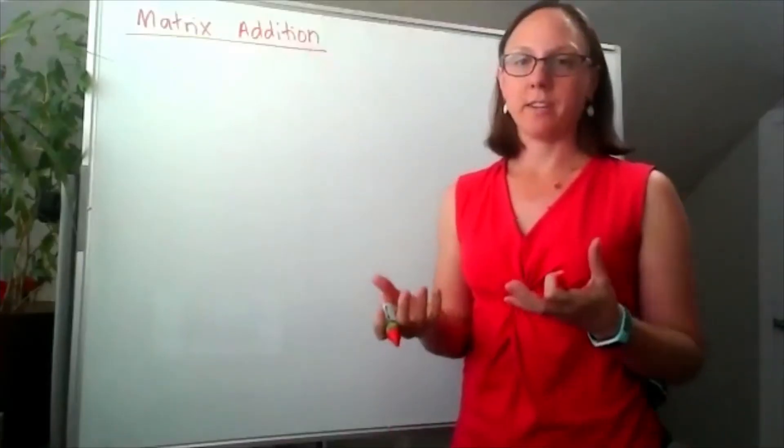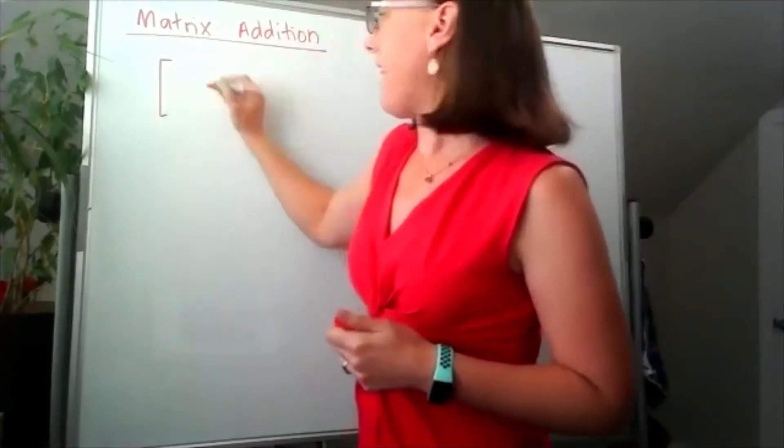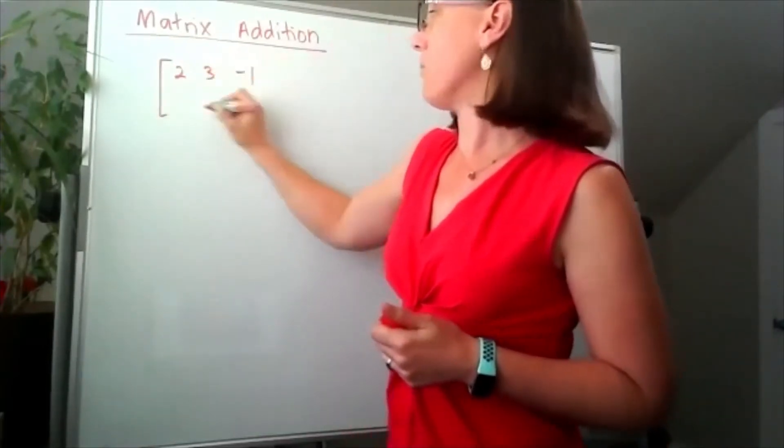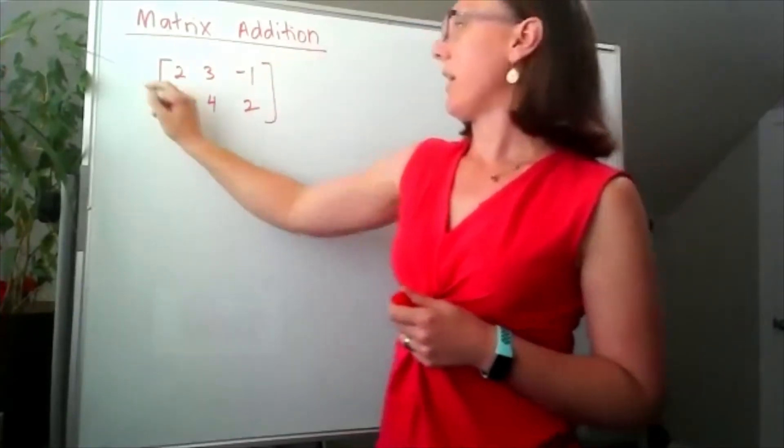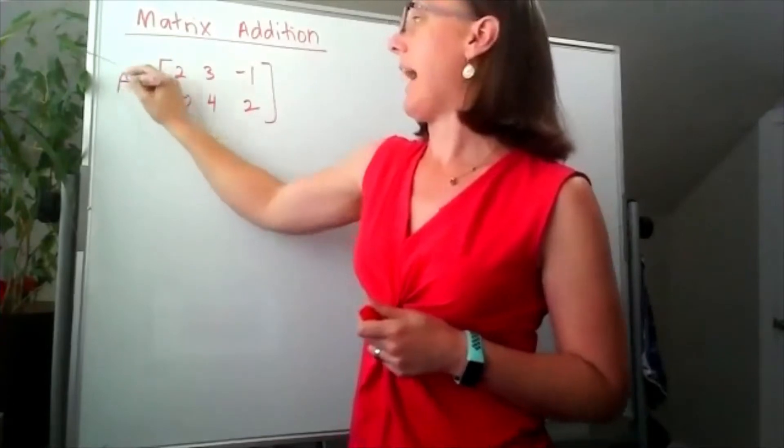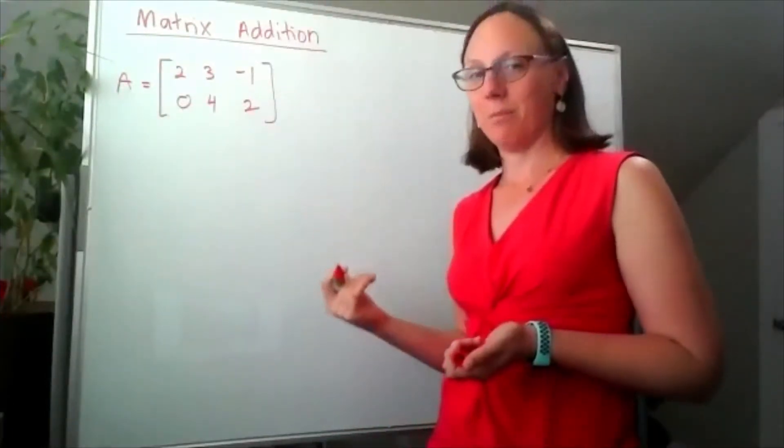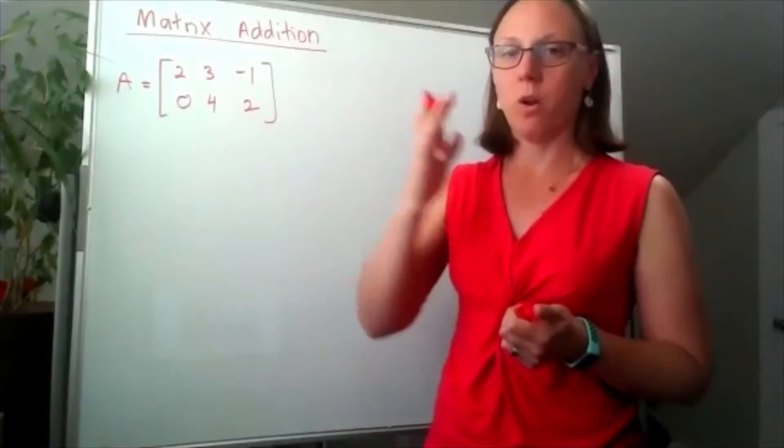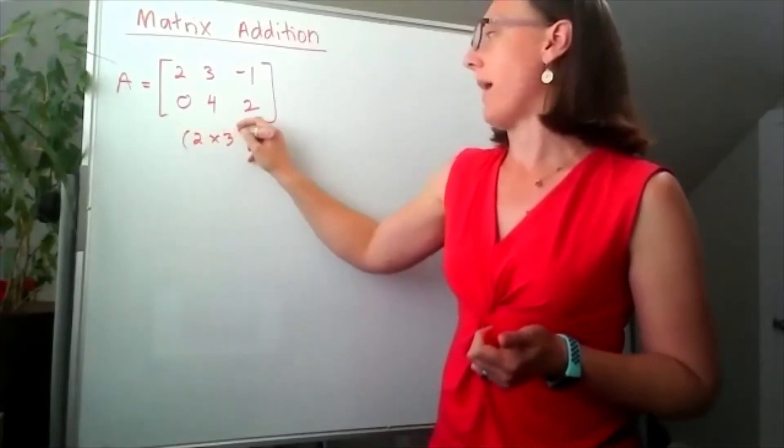The addition between matrices works exactly like we expect it to. If I have the matrix 2, 3, negative 1, 0, 4, 2, and I'll call that A, so just to practice our dimensions, the dimensions of this matrix, it's two rows by three columns, so the dimension is 2 by 3.